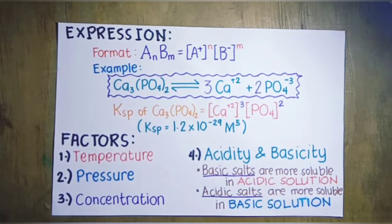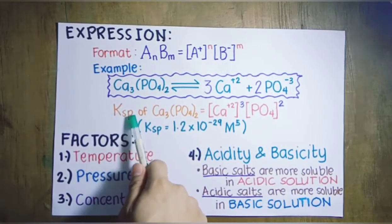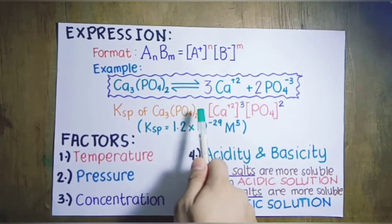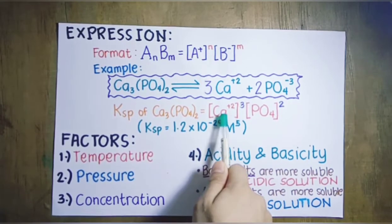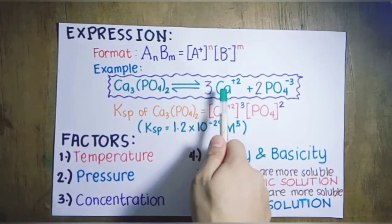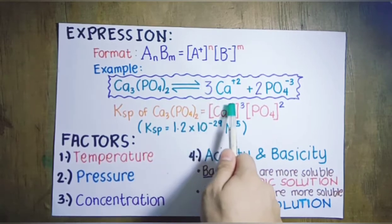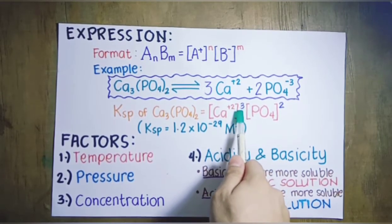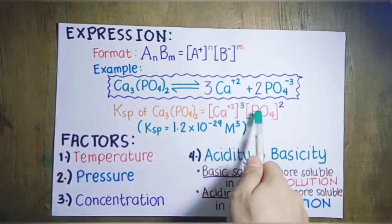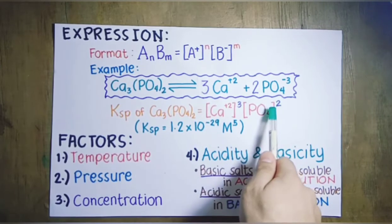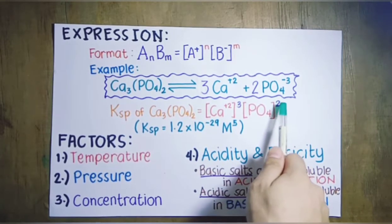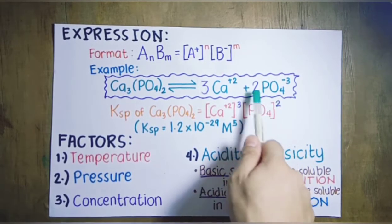Therefore, the Ksp expression for calcium phosphate is: Ksp = [Ca²⁺]³ × [PO₄³⁻]². The calcium ion is our cation with a stoichiometric coefficient of 3, so it is raised to the third power. The phosphate ion is our anion with a stoichiometric coefficient of 2, so it is raised to the second power.